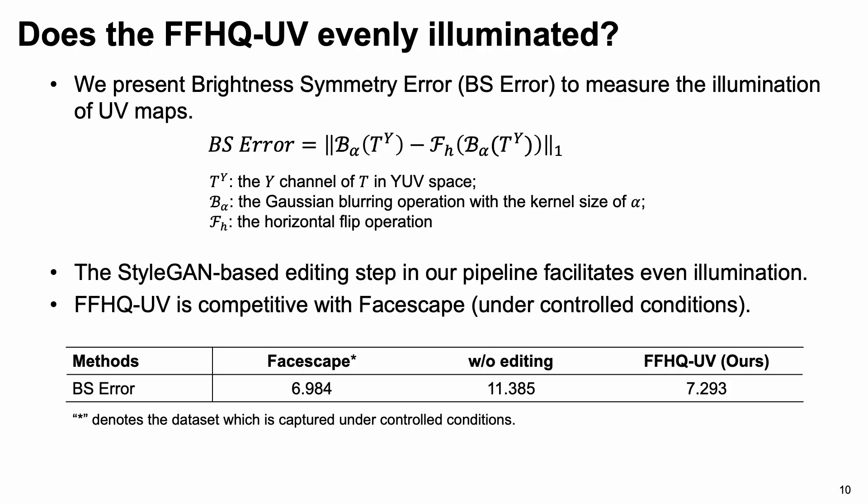To quantitatively evaluate the illumination of UV maps, we present a new metric, namely Brightness Symmetry error. This table gives the average BS error computed over the whole dataset. It shows that the StyleGAN-based editing step in our pipeline effectively improves the quality in terms of more even illumination. Furthermore, the BS error of our dataset is competitive with that of FHESCAPE, which is captured under controlled conditions with even illumination, indicating that our dataset is indeed evenly illuminated.